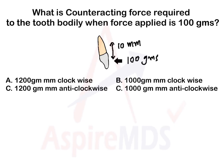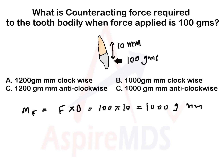This was asked in a previous year exam: what counterforce is required for generating bodily movement? If 1000 gram-millimeters of moment of force is applied, to produce bodily movement we need to apply exactly the same amount — 1000 gram-millimeters — of moment in the counterclockwise direction.